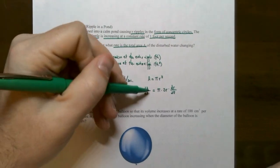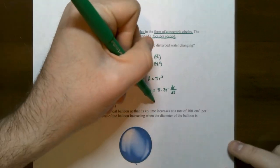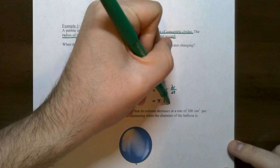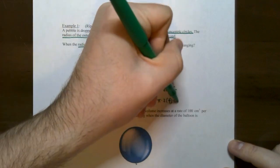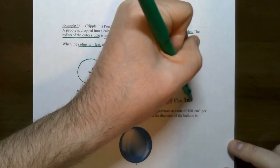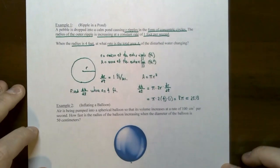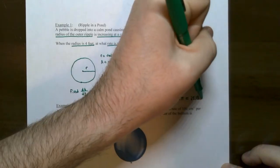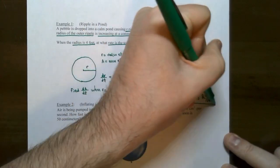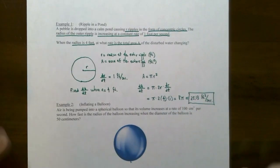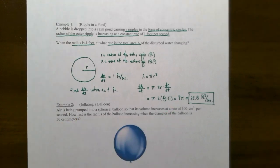We are trying to find dA/dt when the radius is 4, so this equals π times 2 times 4, and the radius was changing at 1 foot per second. This comes out to be 8π, which is approximately 25.13 square feet per second. The area is in feet squared and time was in seconds, so when the radius is exactly 4 feet, the area of the outer ripple is changing at approximately 25.13 square feet per second.